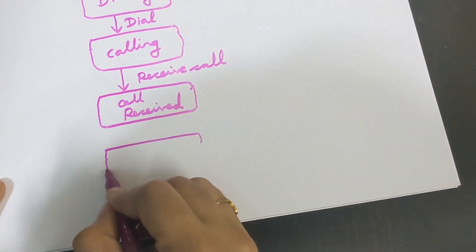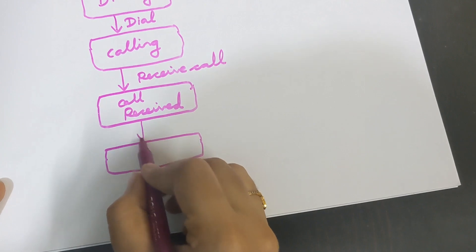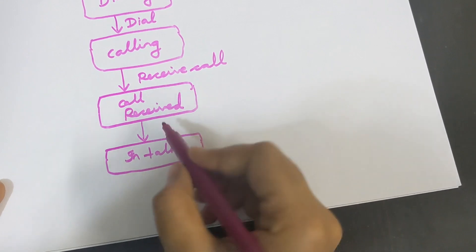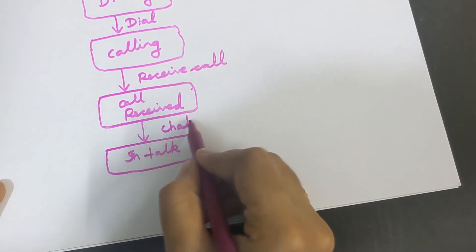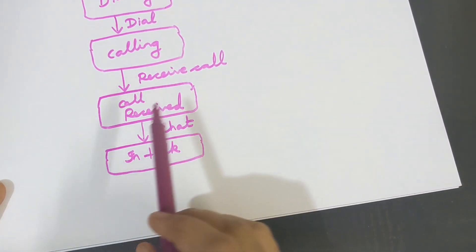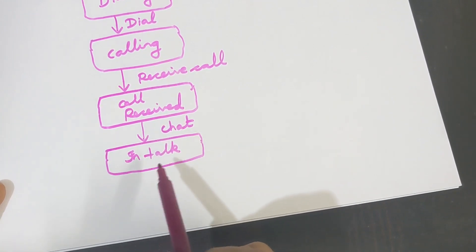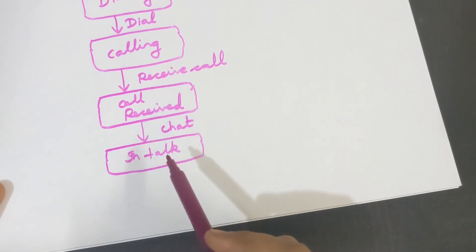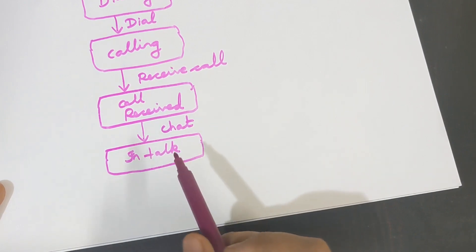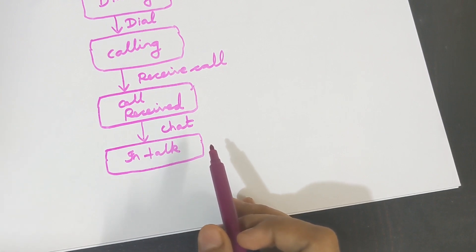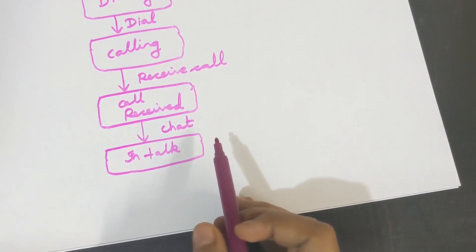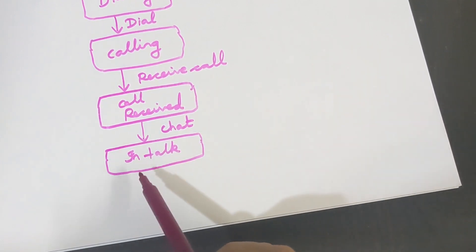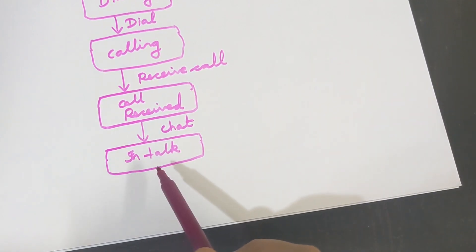The next state is 'in talk.' Only when the event 'chat' happens will the state change from call received to in talk. After the call has been received, the person needs to pick up the call. Only when the event of chatting — that is, talking — takes place will the state change from call received to talking with the person.